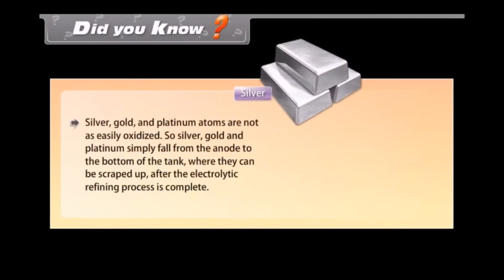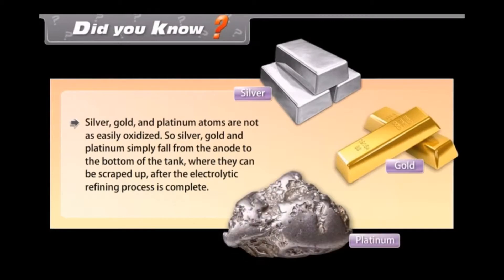Did you know? Silver, gold and platinum atoms are not easily oxidized. So, silver, gold and platinum simply fall from the anode to the bottom of the tank where they can be scrapped up after the electrolytic refining process is complete.